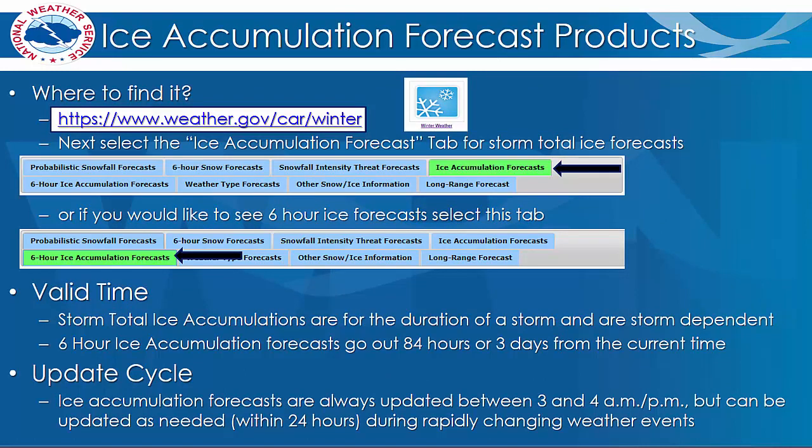To find this product, you will need to navigate to our website and then select the winter weather tile as shown in this example off our main page, or you can go directly to the URL on the slide. Once you are on the winter weather page, select the Ice Accumulation Forecast tab at the top to view the Storm Total Ice Accumulation Forecast. In addition to the event summary forecast, we also provide ice accumulation forecasts in 6-hour forecast blocks.